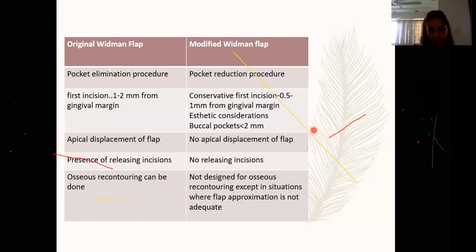What were the modifications of the Widman flap that the modified flap encompassed? The Widman flap was originally a pocket elimination procedure, while the modified version is a pocket reduction procedure. The first incision for the Widman was about 1-2 mm from the gingival margin; we wanted to be more conservative, so the first incision was 0.5 to 1 mm from the gingival margin. Apical displacement of the flap was the norm in the original Widman for pocket elimination, while in the modified Widman we don't have vertical releasing incisions, so no apical displacement. Osseous recontouring was a must with the original Widman, while in the modified Widman we limited it to situations where flap approximation was not adequate.